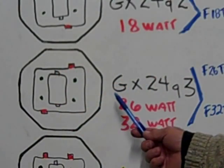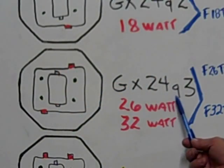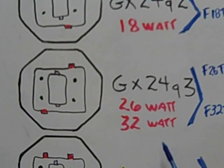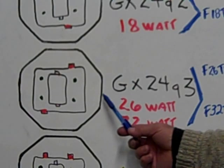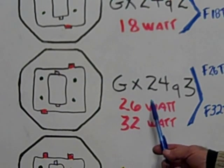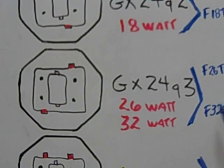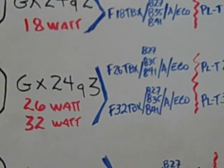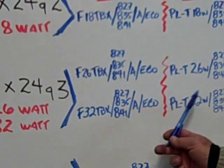I'm going to tell you about the GX24Q3 26 watt and 32 watt base for the triple tube compact fluorescent. Even though the manufacturer designations are different, the bases are all the same for the different manufacturers.